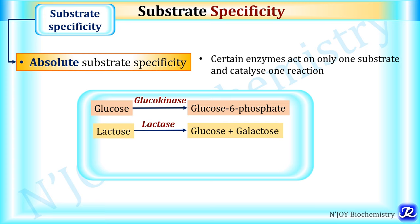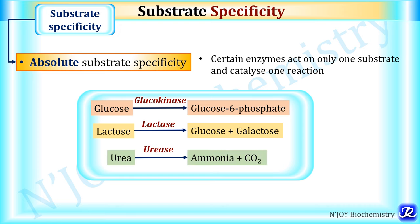Likewise, lactase acts on the disaccharide lactose — made up of glucose and galactose — and converts it into glucose and galactose. Another example is urease, which acts on urea to form ammonia and carbon dioxide. So glucokinase, lactase, and urease all have absolute substrate specificity.